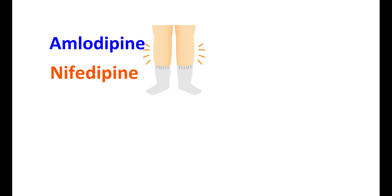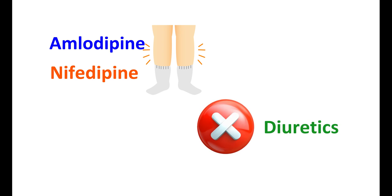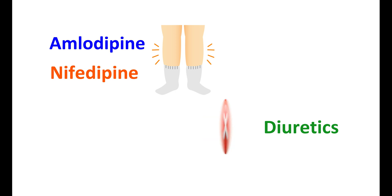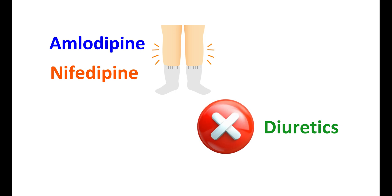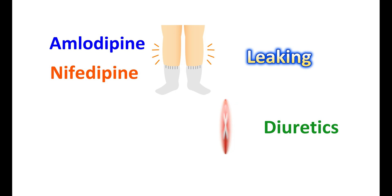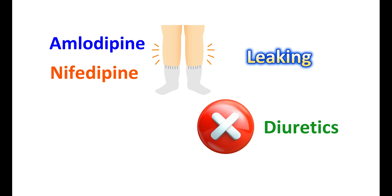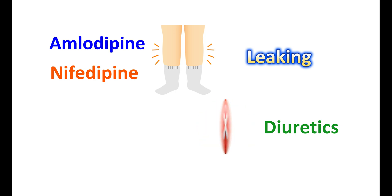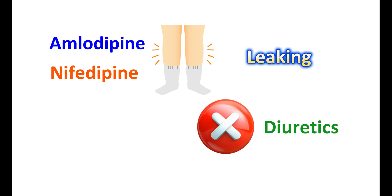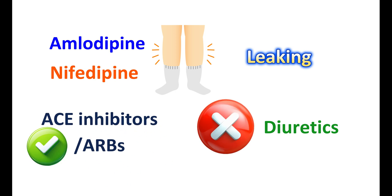Interestingly, this edema cannot be corrected by use of diuretics. Diuretics are used to increase excretion of excess body fluids, but calcium channel blockers are not producing excess body volume — they are only increasing the leaking of fluids from capillaries into the surrounding tissues in the legs. Therefore, diuretics are not effective in relieving leg edema caused by CCBs. However, leg swelling can be controlled by reducing the dose of CCBs, using non-dihydropyridine calcium channel blockers, or adding other anti-hypertensive drugs like ACE inhibitors or ARBs.